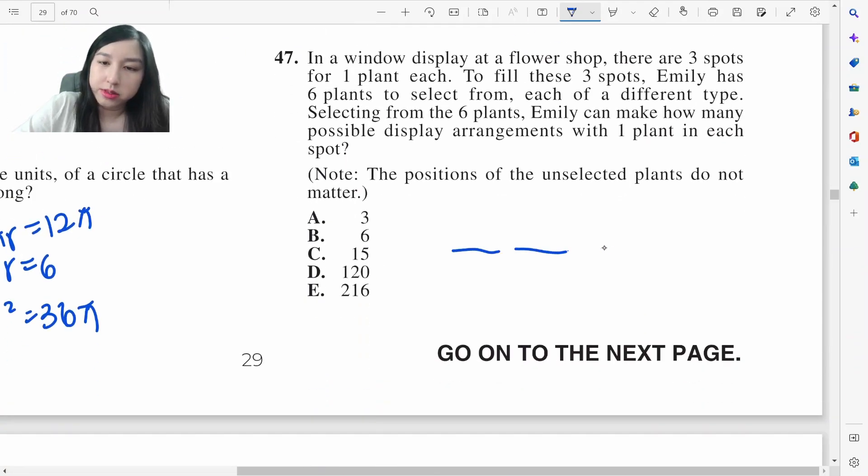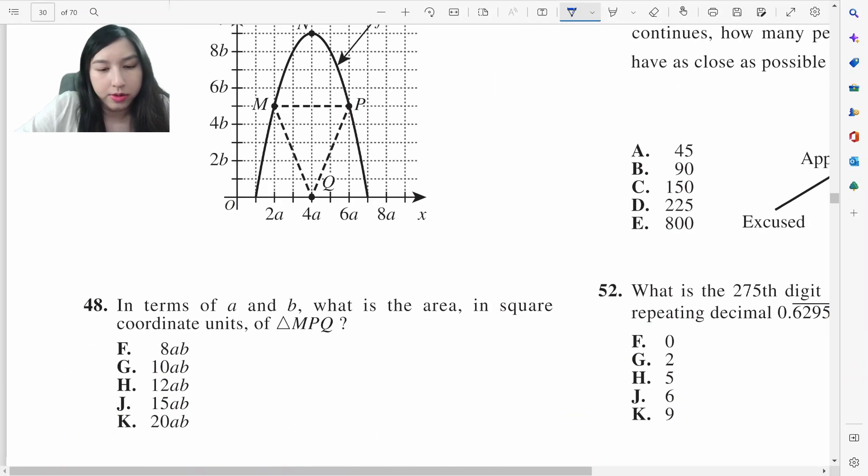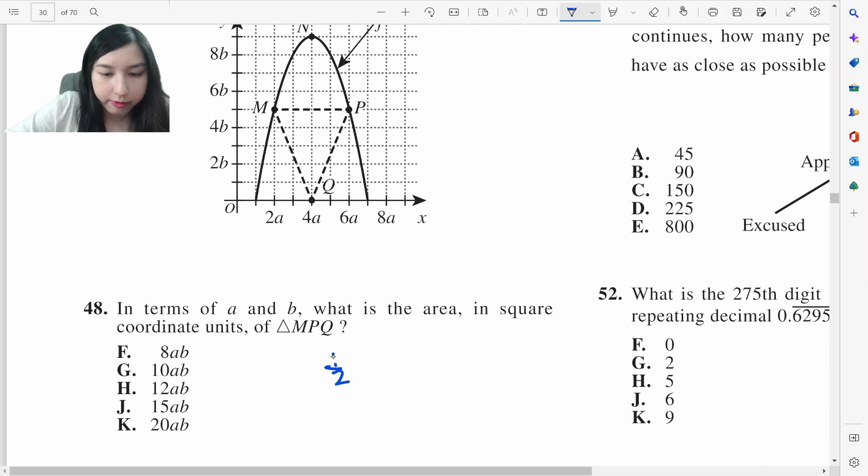There are three spots, six plants to choose from. Positions of the unselected plants do not matter. How many possible displays can she make? Well, she can select six plants. She has six options times five options times four options. So that's 120. What about this one? Area of the triangle. Well, that's half times, what's the base? 4A times 5B, which is 10AB, G.